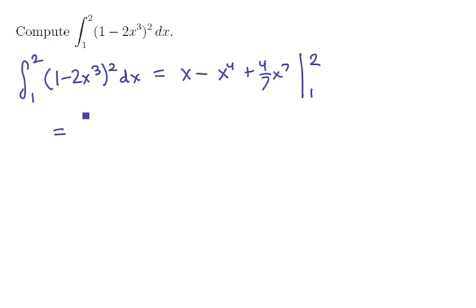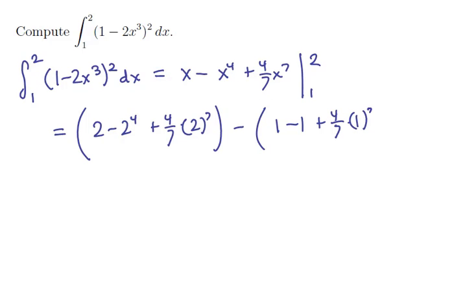If we plug in 2 into this formula, we'll have 2 - 2⁴ + (4/7)·2⁷. If we plug in 1 and subtract, we're going to have 1 - 1 + 4/7, and we'll subtract this expression off.